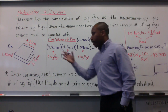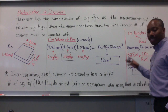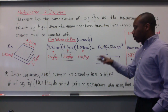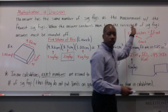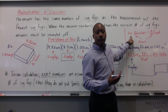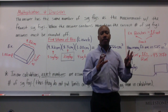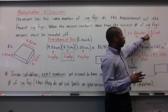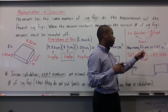Now, a side note. In our calculations, exact numbers — which you learned about last video — are assumed to have an infinite number of significant figures. Thus, they do not put limits on your answers when using them in your calculations. For example, there are 12 inches in one foot — we know that, that's exact. There's no uncertainty there; it is an accepted value. These are exact numbers.